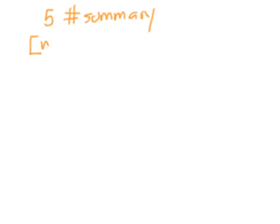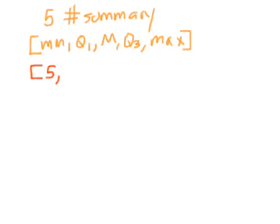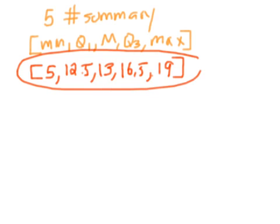The five numbers are, usually you write them in square brackets, the min, Q1, the median, Q3, and the max. So for the numbers we've been working with all along, the five-number summary is, the min of these numbers is 5, Q1 we found was 12.5, the median we found was 13, Q3 we found was 16.5, and the max we found was 19. So this would be the five-number summary for these numbers.